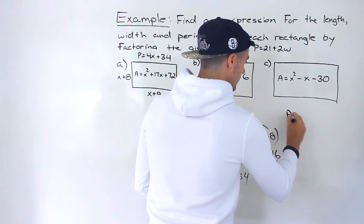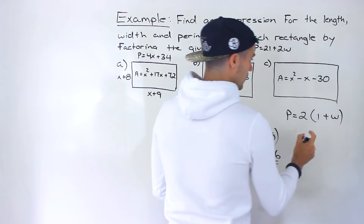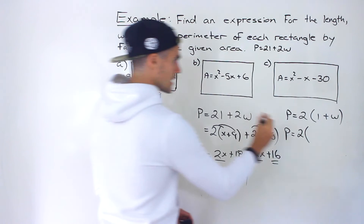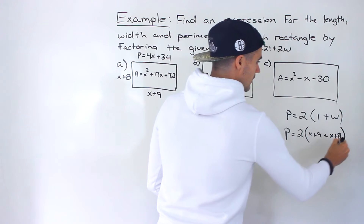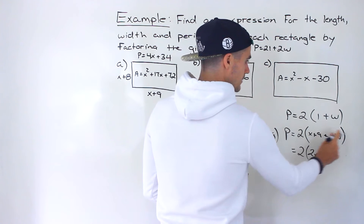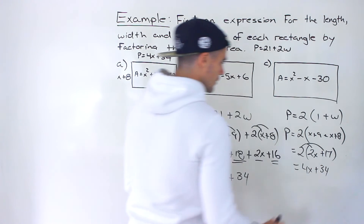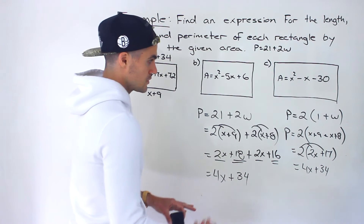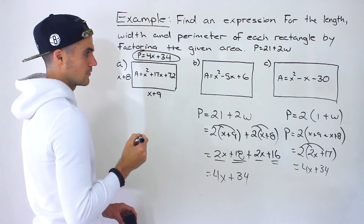If you use the other formula — P equals 2 times the quantity (x plus 9 plus x plus 8) — you simplify inside the bracket: x plus x is 2x, 9 plus 8 is 17. Then distributing the 2 gives 4x plus 34. Same answer either way. Personally I prefer the 2L plus 2W version, but whichever way you do it, the perimeter is 4x plus 34 for this first rectangle. That's the process for all of these.